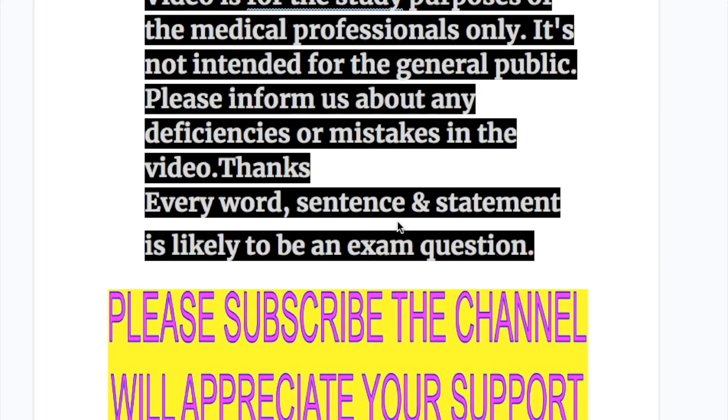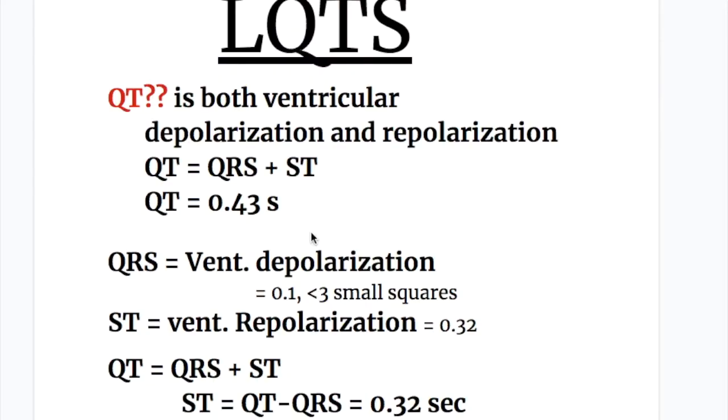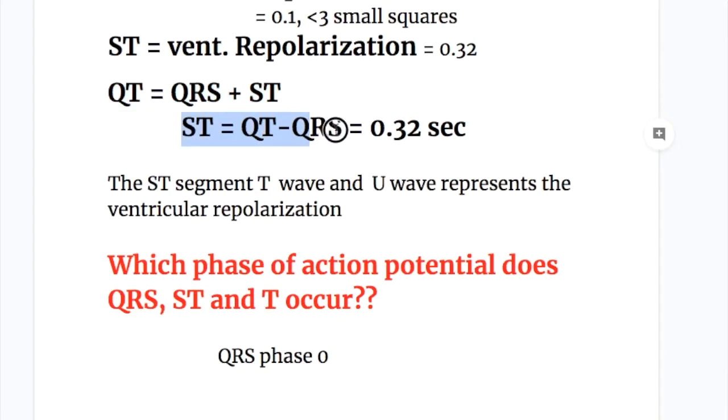In this video we will discuss Long QT syndrome LQTS, its etiology, pathology, different types of LQTS and the treatment. What's QT interval? QT is both ventricular depolarization and repolarization. QT equals QRS plus ST segment, and its total duration is 0.43 seconds. QRS is ventricular depolarization at 0.1 seconds, whereas ST segment which is ventricular repolarization is 0.32 seconds. So QT equals QRS plus ST, and ST segment is QT minus QRS, equal to 0.32 seconds.